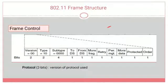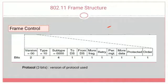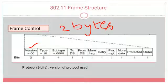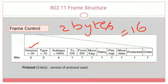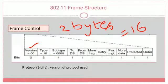Frame control is 2 bytes, which equals 16 bits, and is classified into 11 different subfields. The first subfield is version, allocated 2 bits, which indicates which version of the protocol is being used. The second subfield is type, also allocated 2 bits, which specifies the type of frame — whether it is a data frame, control frame, or management frame.